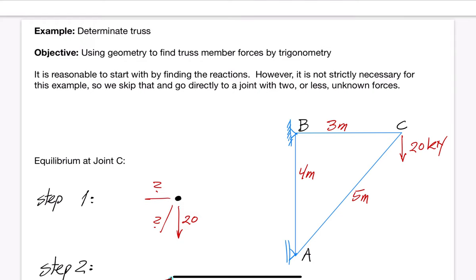At any joint with two or less unknown forces, we can employ horizontal and vertical equilibrium in order to determine the unknown forces. In this case, we have that situation at joint C. The 20 kN force is known, and the two axial forces in the truss members are unknown.